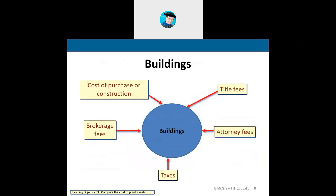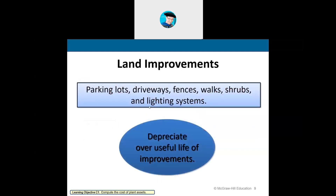For buildings, if you're constructing a new building, you add up all your construction costs plus brokerage fees, taxes, titling fees, attorney's fees, surveying fees, and permitting fees. If it's an already existing building, it's the purchase price. All of those costs together equal the cost of acquisition for the building.